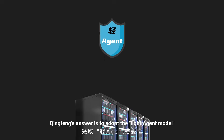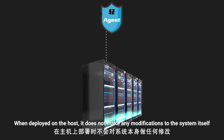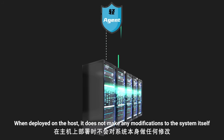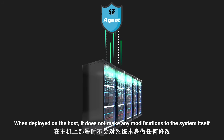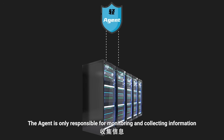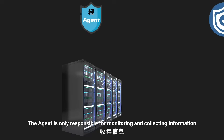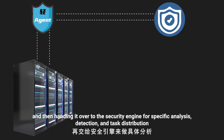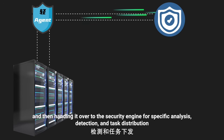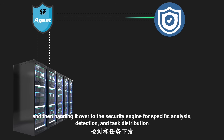So how can security and stability both be achieved? The answer is to adopt the light agent model. When deployed on the host, it does not make any modifications to the system itself. The agent is only responsible for monitoring and collecting information, then handing it over to the security engine for specific analysis, detection, and task distribution.